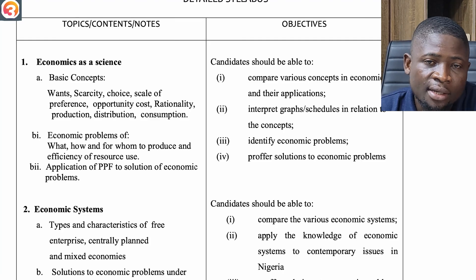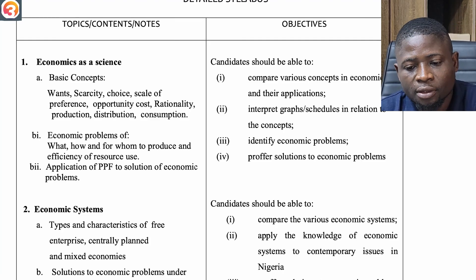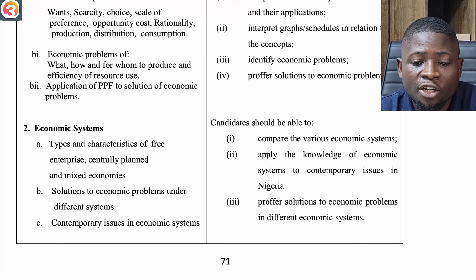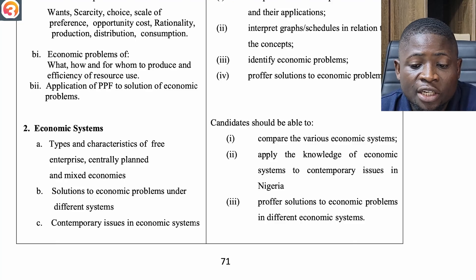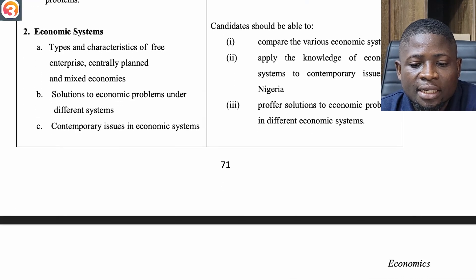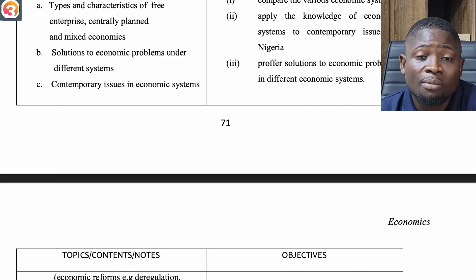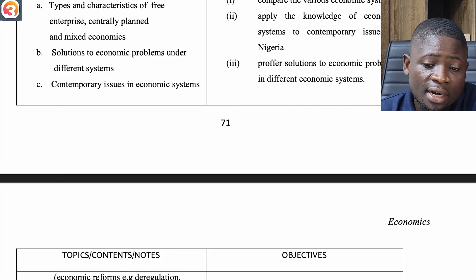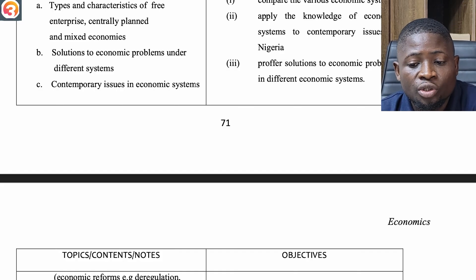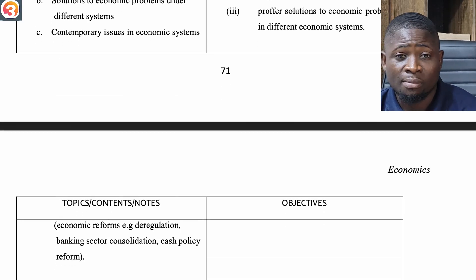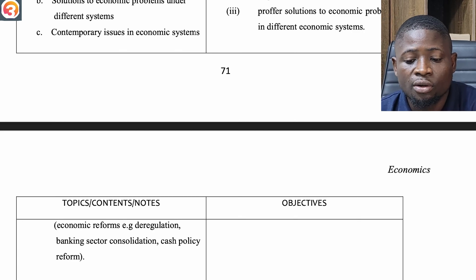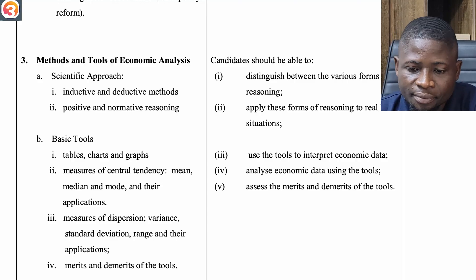Economics as a Science covers basic concepts: scarcity, choice, scale of preference, opportunity cost, rationality, production, distribution, consumption; economic problems of what, how, and for whom to produce; efficiency of resource use; and the application of the Production Possibility Frontier (PPF) to solving economic problems. The second topic is Economic Systems — types and characteristics of free enterprise, centrally planned and mixed economies; solutions to economic problems under different systems; contemporary issues including economic reforms, banking sector consolidation, and cash policy reform.